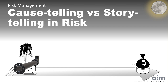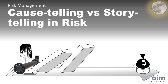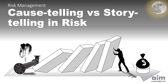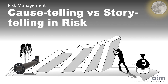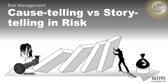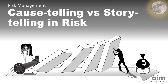Unlike storytelling, which can dramatize or oversimplify, cause-telling traces the actual chain of events, domino by domino. In this video, we'll explore how mapping causal chains reveals the true structure behind risk events, and why getting it wrong can cost more than just a good story.